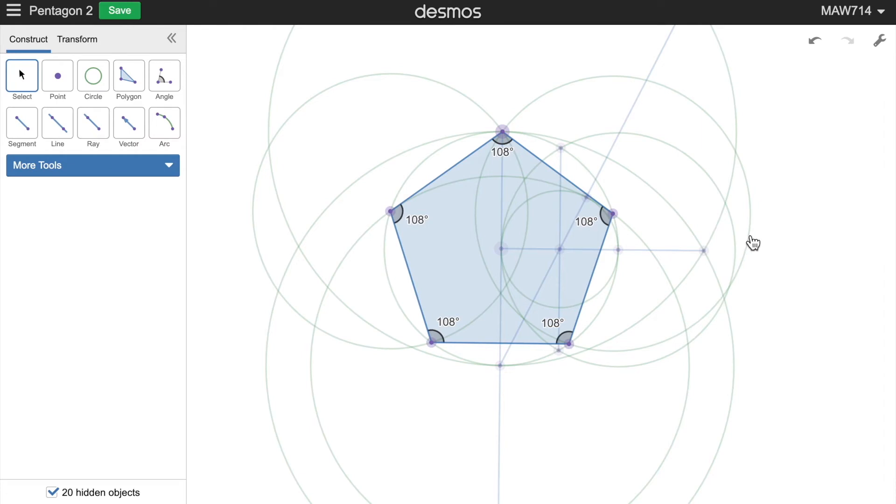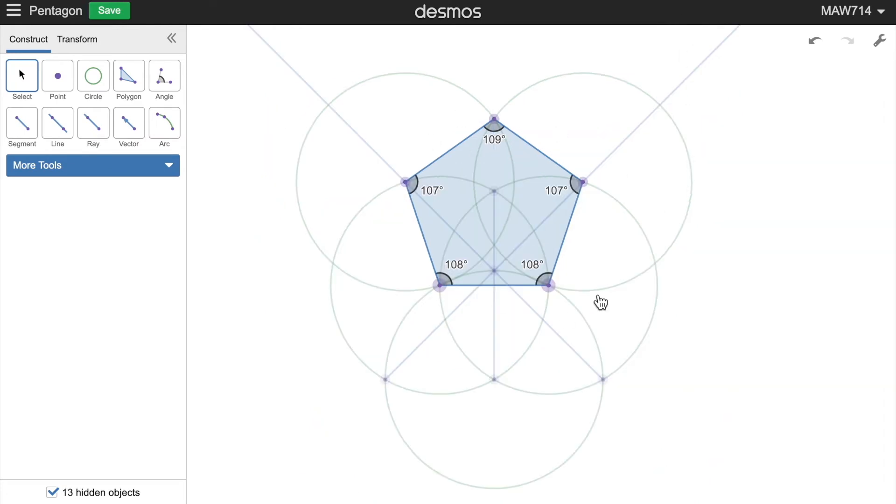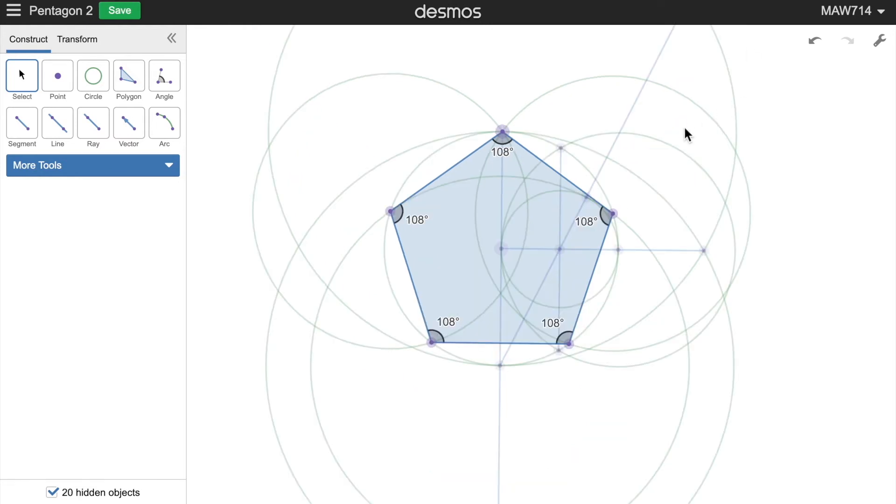So if you don't mind an approximate pentagon, then just go with this. I mean, it already looks like a pentagon, but if you really want the most accurate pentagon, then I'll explain this method now.